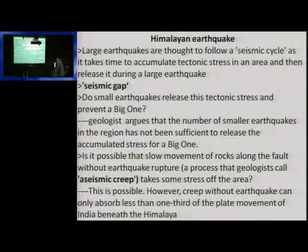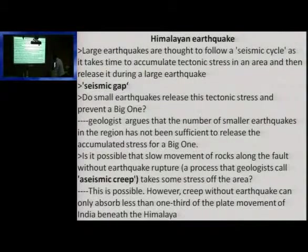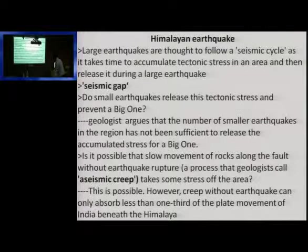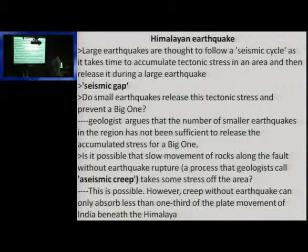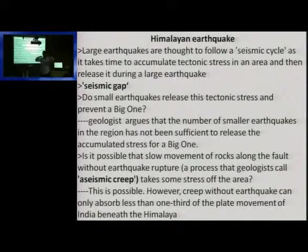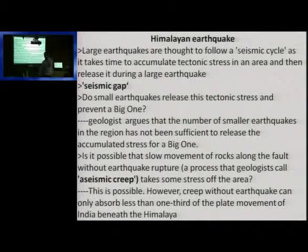Second: is it possible that slow movement of rocks along the fault, without earthquake rupture, takes some stress off the area? This is possible. What is this called? It is called aseismic creep. Aseismic creep means there will be motion, but there won't be an earthquake. That is called aseismic creep — it is just a term.